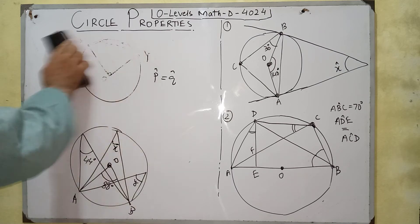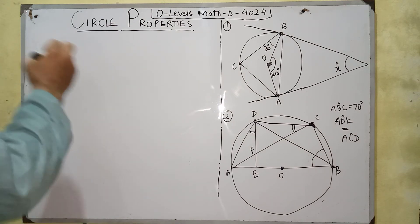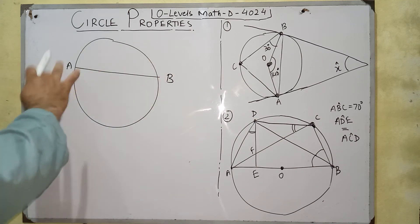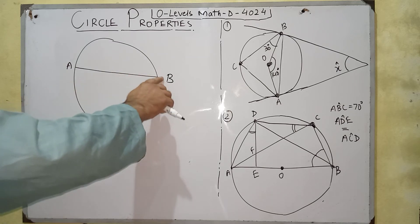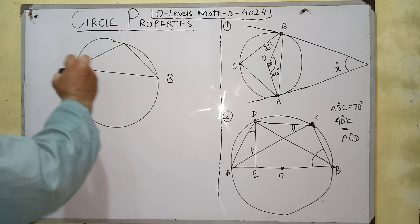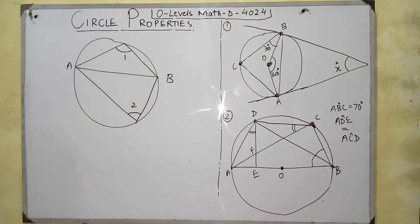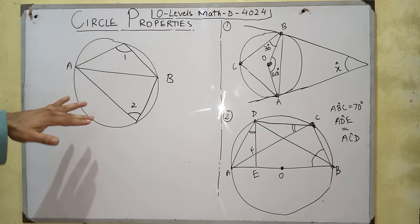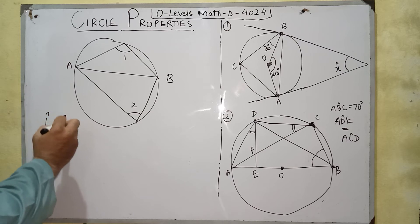The next property is about segments of a circle. If you have a chord AB, it divides the circle into two segments: a minor segment and a major segment. If this chord makes two angles at the circumference of the circle in opposite segments — angle one and angle two — then both angles will be supplementary, meaning their sum equals 180 degrees.